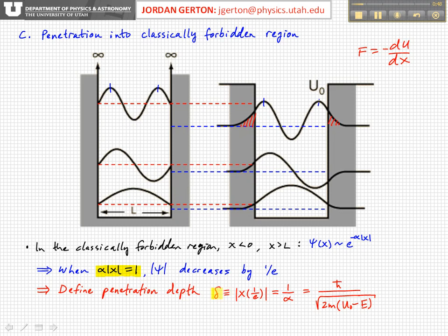Using this relationship, we know that delta is equal to 1 over alpha. And so if you just write the explicit expression for alpha, we get h-bar over root 2m times u sub 0 minus e.